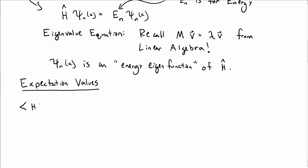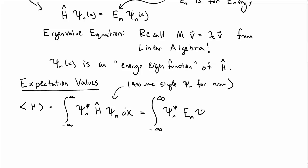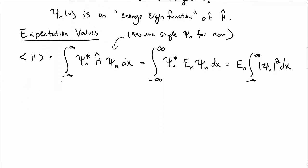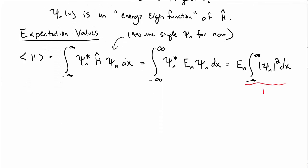Let's talk about expectation values of the Hamiltonian. We take the expectation value of the Hamiltonian, we'd write that as psi n star h-hat psi dx. We're only assuming a single psi sub n for now. Well, h times psi is just e times psi, so we can pull that e outside of the integral, and then we have the integral of psi sub n squared dx. But that integral is just equal to 1 because the wave function is normalized, so the expectation value for h is just e sub n, the energy of the wave function.